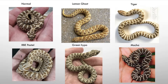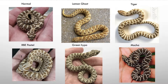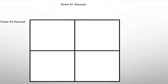Here are a few pictures of some dominant traits — not all of them. I have the normal, the lemon ghost which becomes more yellow as it ages, the tiger which has tiger-stripe patterns, the RBE pastel which brings more contrast between the background and pattern, the green hypo which is a green-phase hognose, and the mocha which is more brownish with a larger, more jumbled pattern.